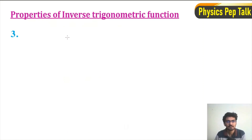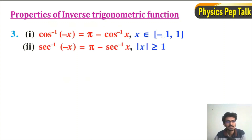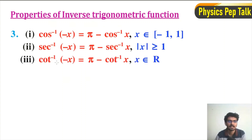Here we will see the first one. cos⁻¹(-x) = π - cos⁻¹(x), for x belonging to the closed interval [-1, 1]. Second, sec⁻¹(-x) = π - sec⁻¹(x), for |x| ≥ 1. And third, cot⁻¹(-x) = π - cot⁻¹(x), for x belonging to the set of real numbers.